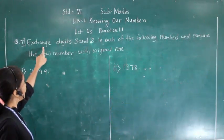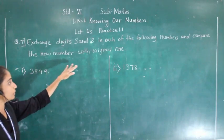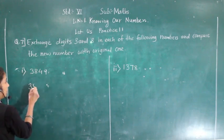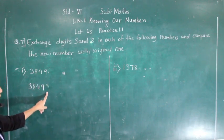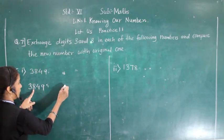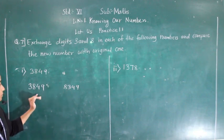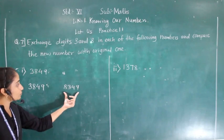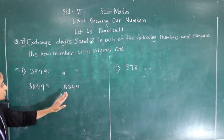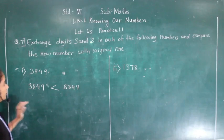Question number 7: exchange digits 3 and 8 in each of the following numbers and compare the new number with the original. The given number is 3849. After exchanging 3 and 8, the new number becomes 8349. Comparing: 3849 is the smaller number and 8349 is the greater number.